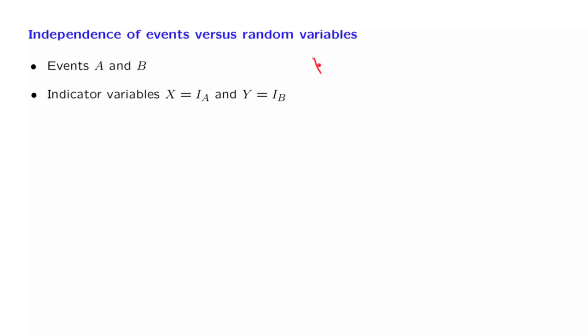So for example, the random variable X is defined to be equal to 1 if event A occurs, and to be equal to 0 if event A does not occur. And there is a similar definition for random variable Y. In particular, the probability that random variable X takes the value of 1 is the probability that event A occurs.